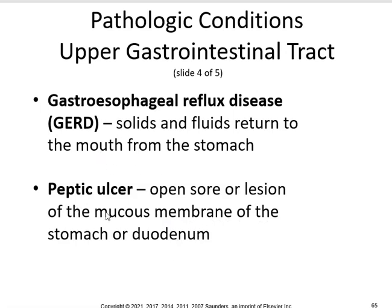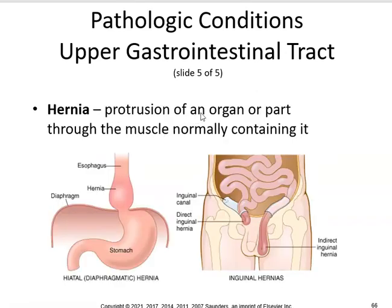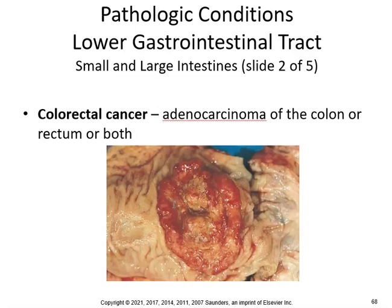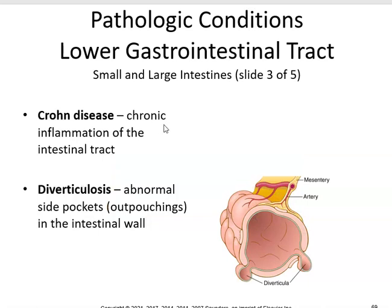So all these are bad. You've probably heard of GERD. You've probably heard of ulcers. You've heard of hernias — a protrusion of an organ or part through the muscle normally containing it, usually more common in men — so you get an inguinal hernia. Anal fistula is an abnormal tube-like passageway near the anus. Colonic polyps protrude from the mucous membrane of the colon. Colorectal cancer is an adenocarcinoma of the colon or rectum or both. Crohn's disease is chronic inflammation of the intestinal tract.